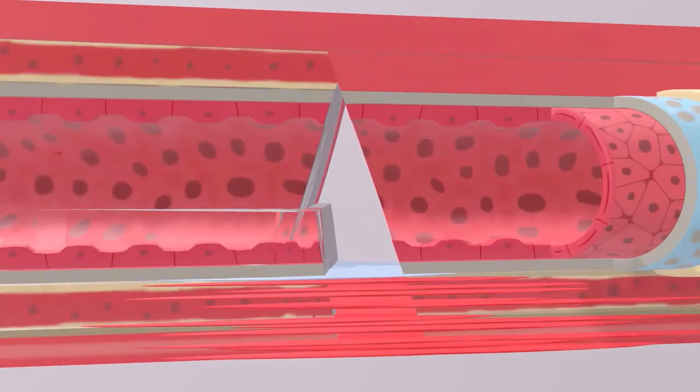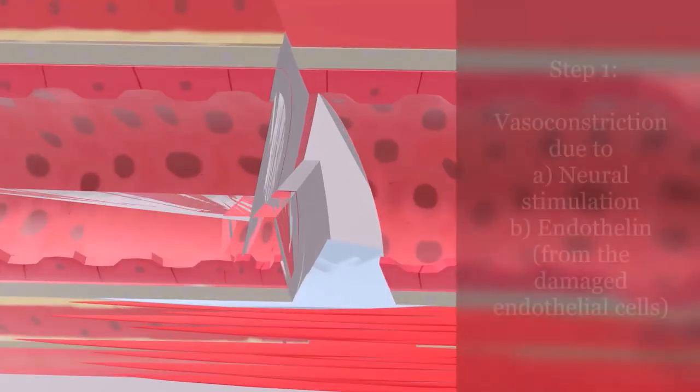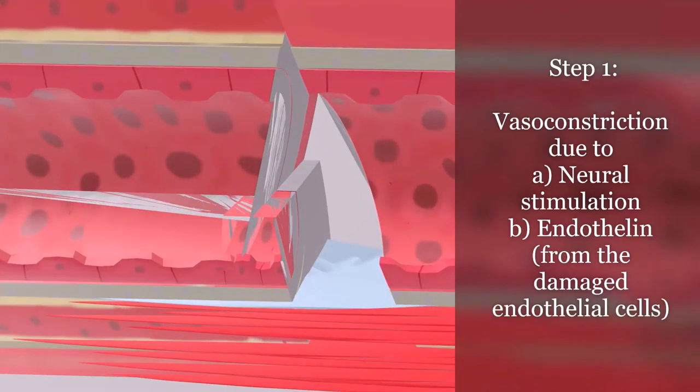The first thing that happens is that there's a transient vasoconstriction. This vasoconstriction happens because of two things: neural stimulation — the neuron tells the blood vessel to constrict — and endothelin is released from the damaged endothelial cells, which also tells the blood vessel to constrict.